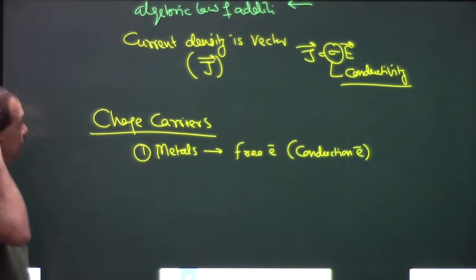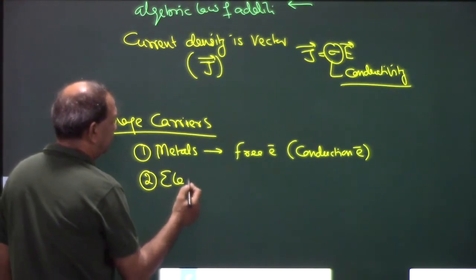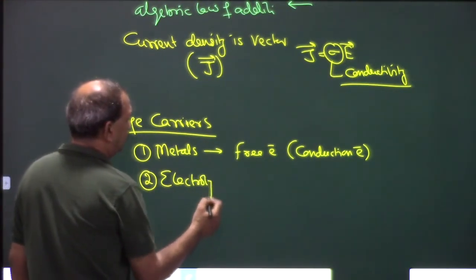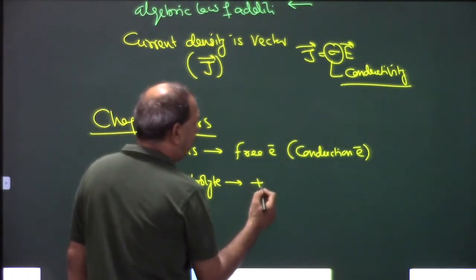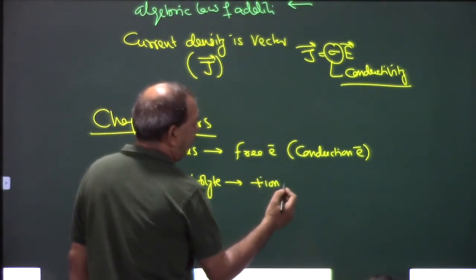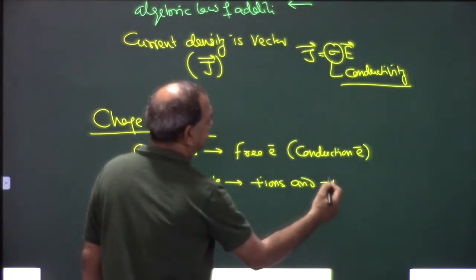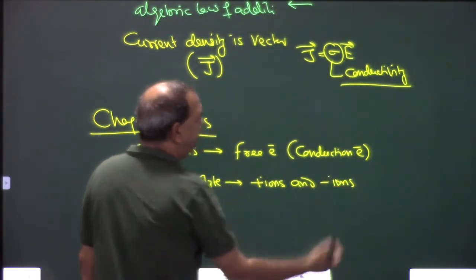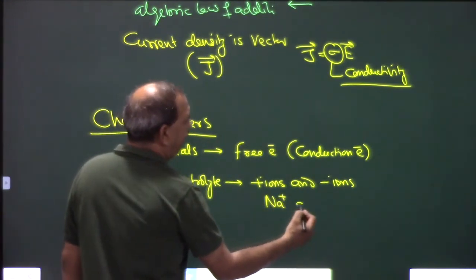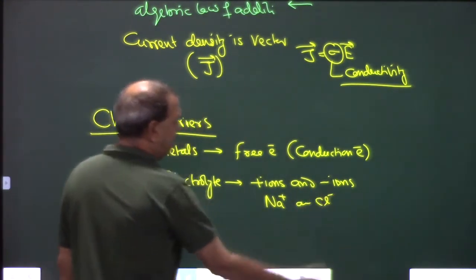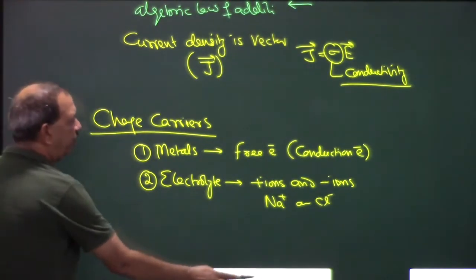In electrolytes, both positive ions and negative ions are present — for example, Na⁺ and Cl⁻. So current in electrolytes is due to the motion of ions.